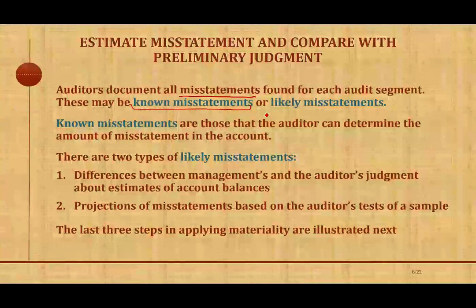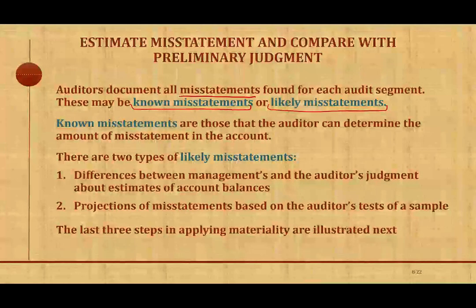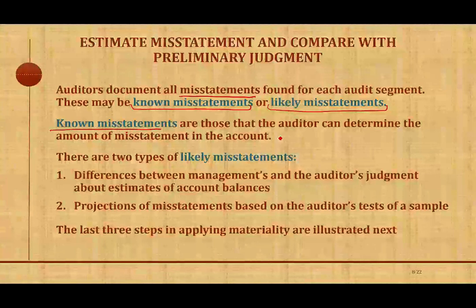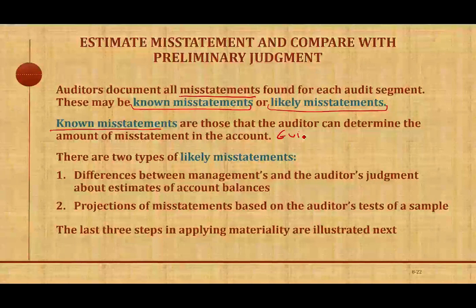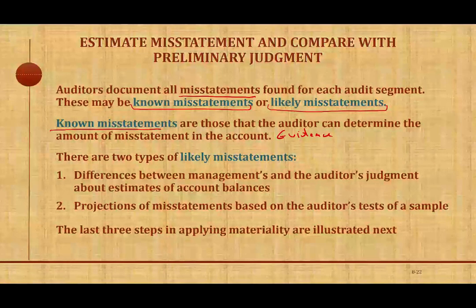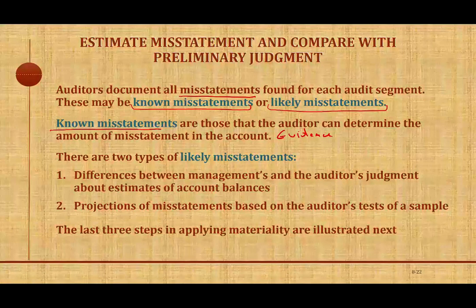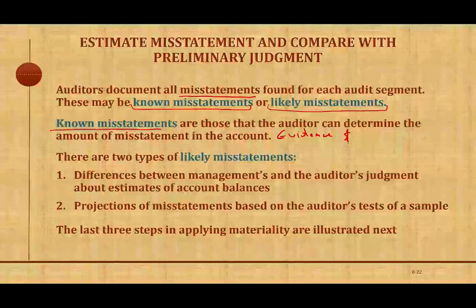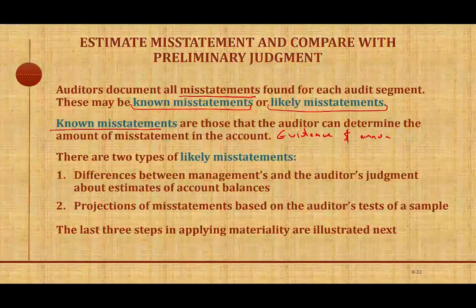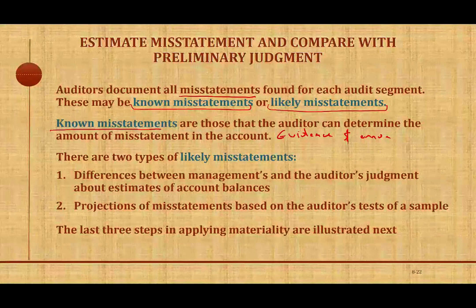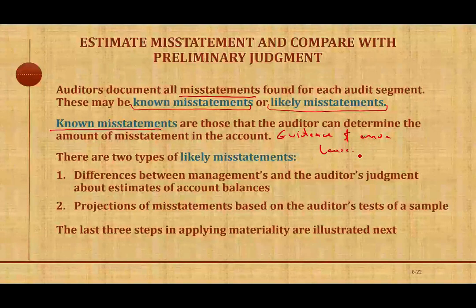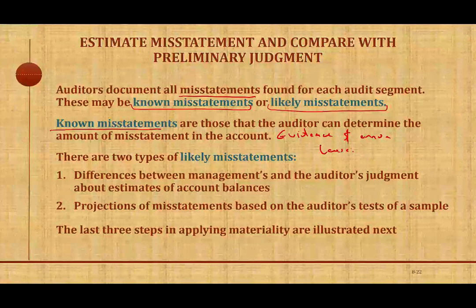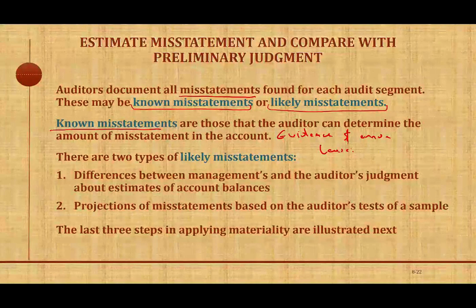We're going to have something called known misstatements, and something called likely misstatements. Known misstatements are those that the auditor can determine the exact amount of the misstatement in the account — these are based on evidence. We find factual, actual errors. Basically, we looked at the actual transaction and can pinpoint the time, the date, who performed the transaction, and who made the error. For example, if we had a lease that should have been capitalized but was expensed — we find that error. That's a known misstatement.